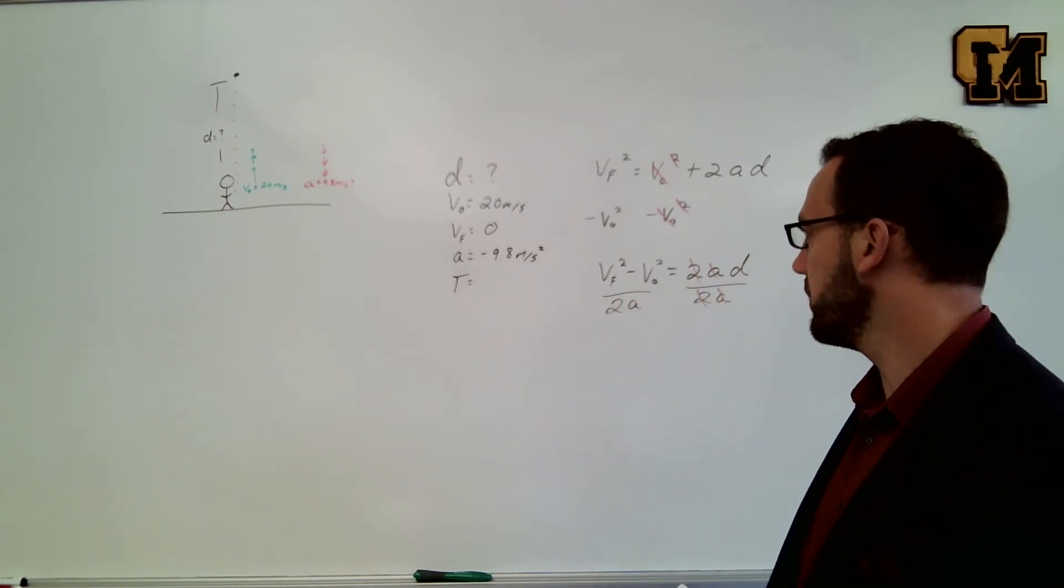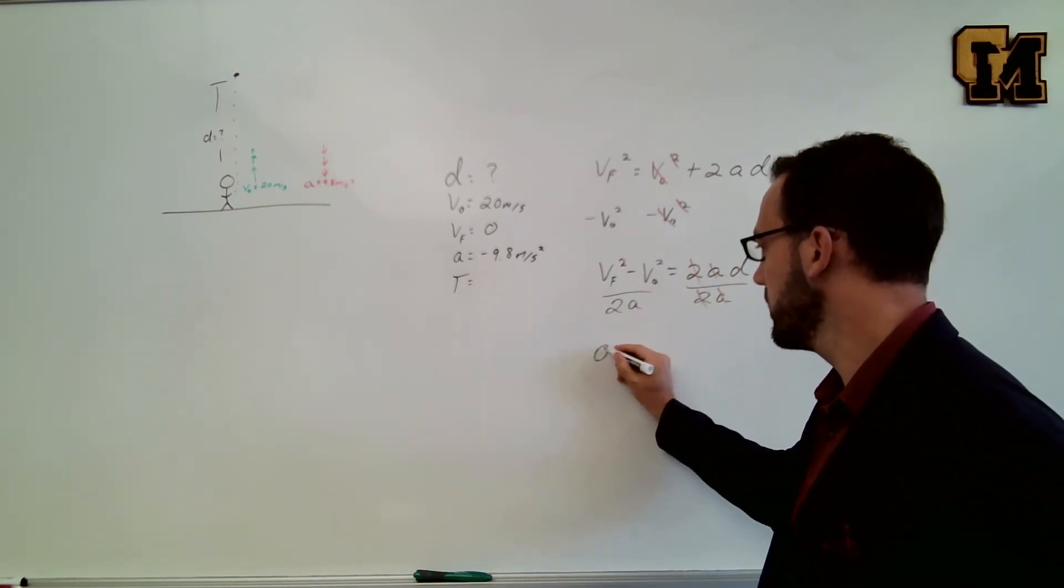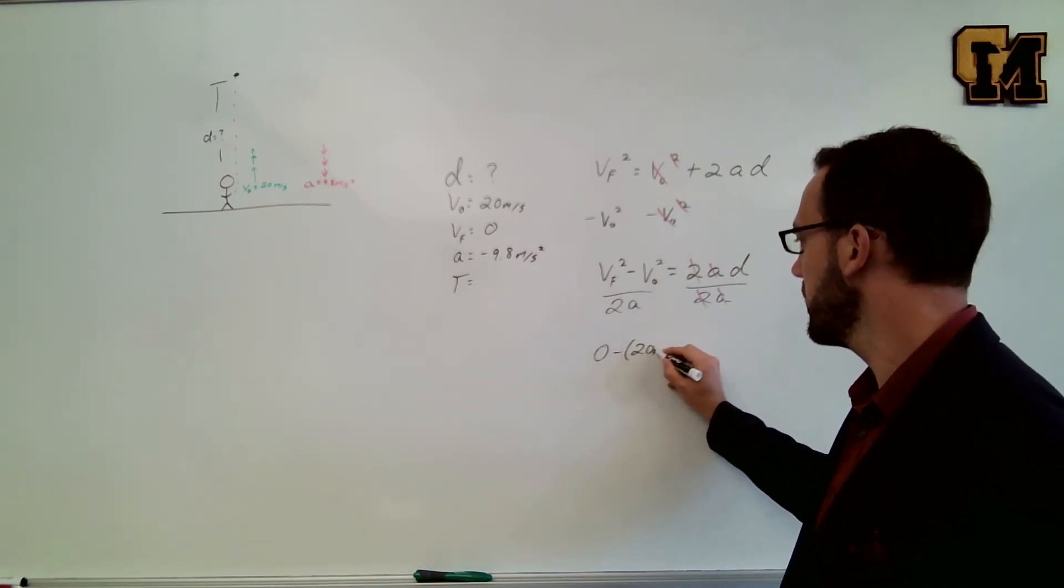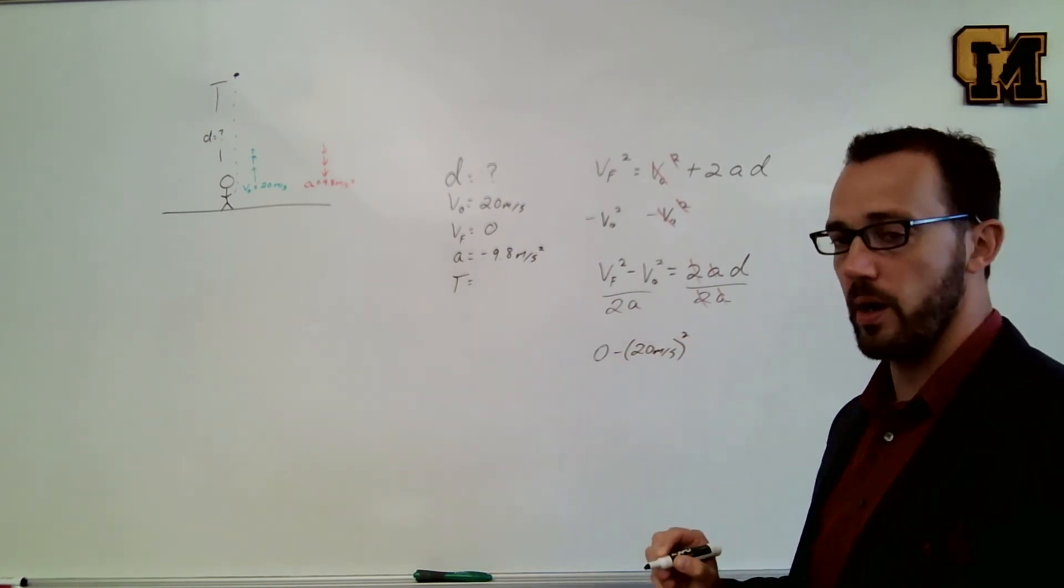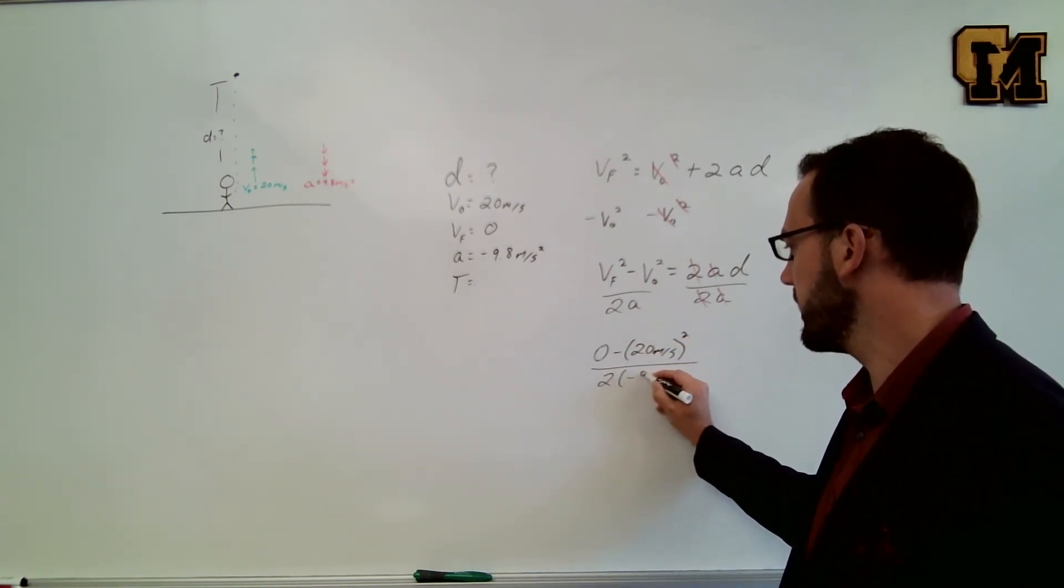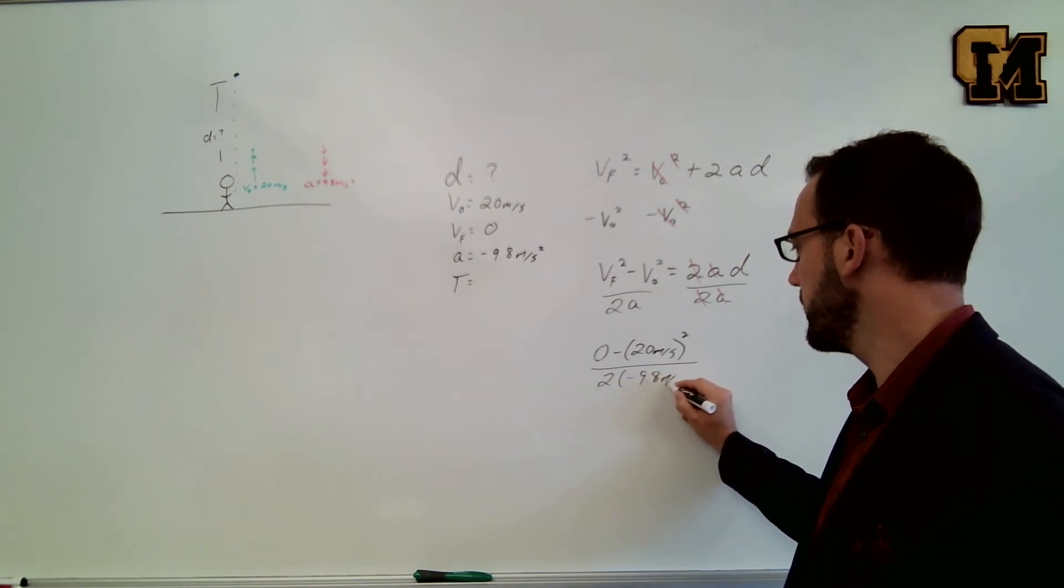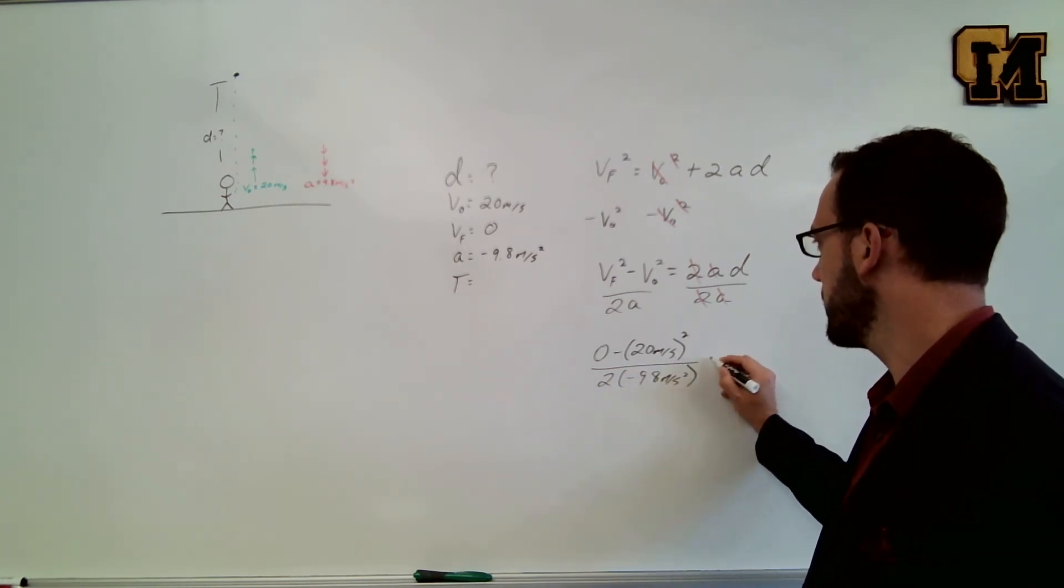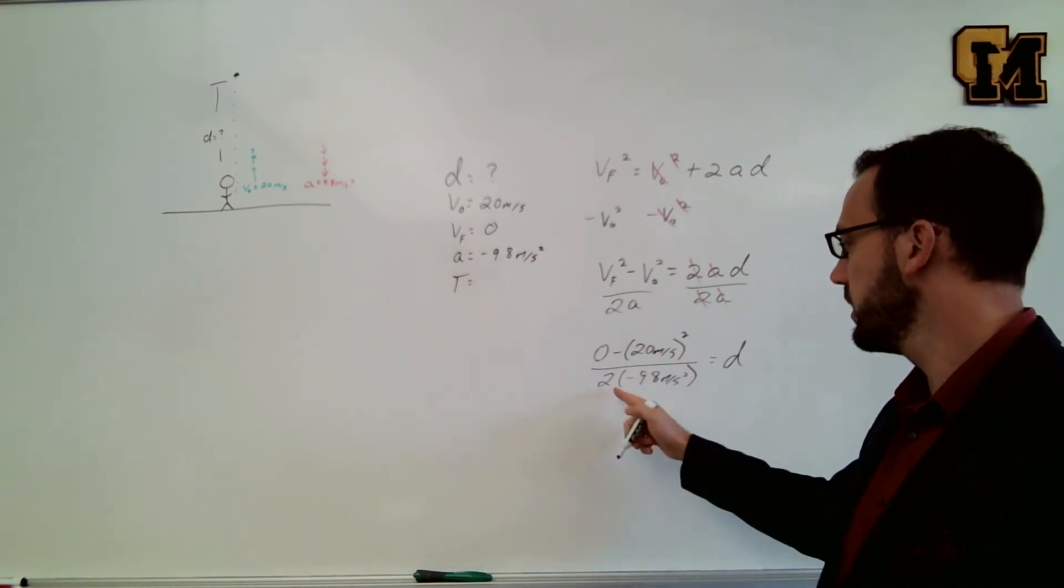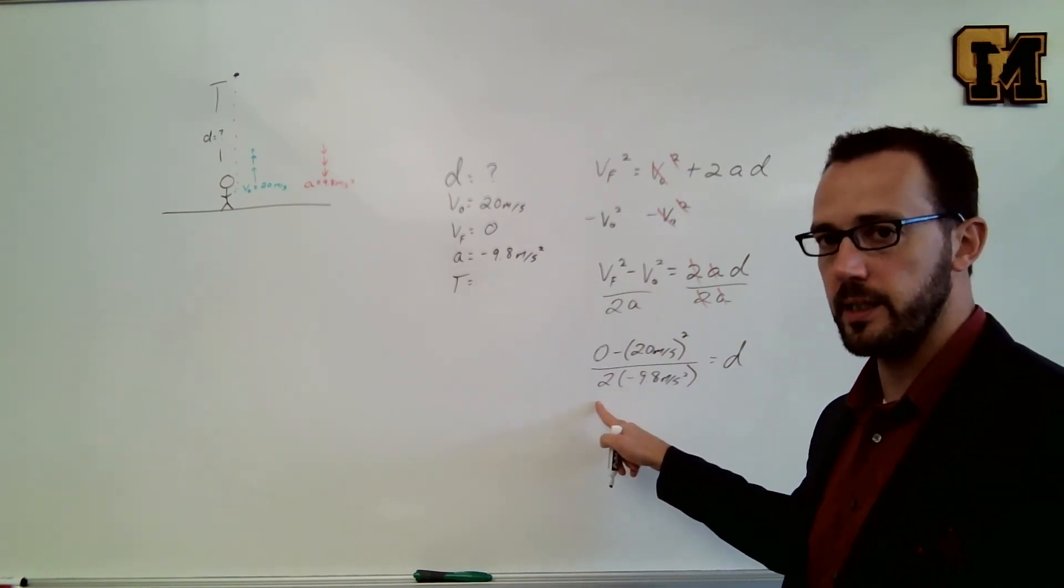I'm going to plug in my numbers. VF is just 0 minus V naught was 20. We still have to square that number divided by 2 times negative 9.8 meters per second squared. 20 squared is 400, 9.8 times 2 is 19.6.